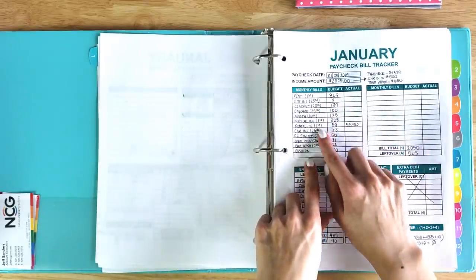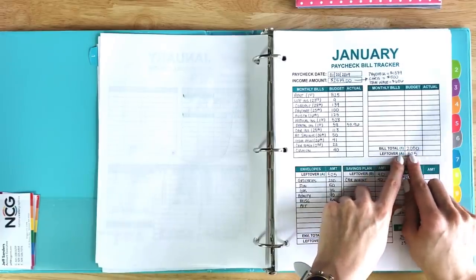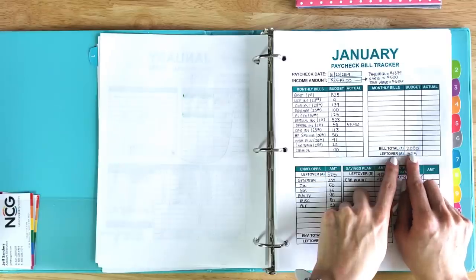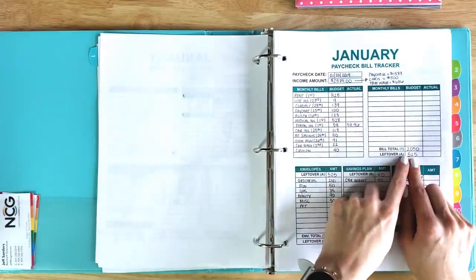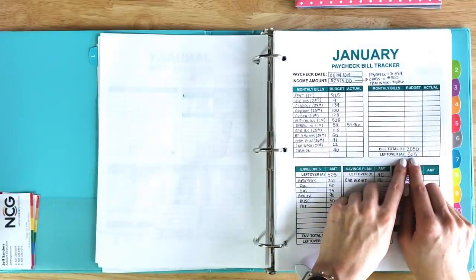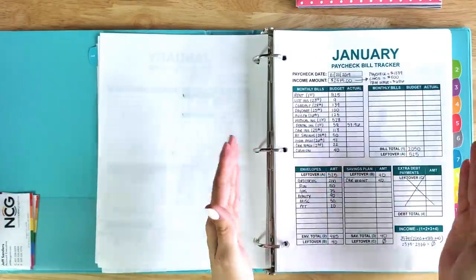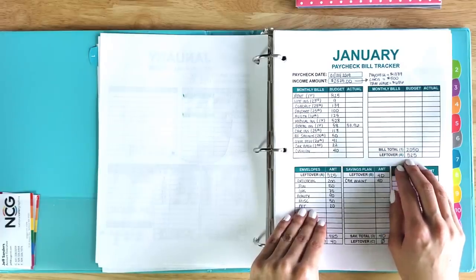After writing all of my regular bills down, I get a bill total. My total bills for the paycheck on the 20th is $2,050. If I subtract that from the income that I received, I'm left with $525. Now that my regular bills are taken care of and I know that I have enough income to cover my bills, it's a matter of figuring out what to do with this leftover money.